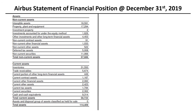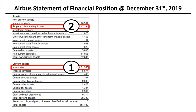Now that we know the main line items on the asset side, it is important to put things in perspective by identifying the top three by size: inventories of 32 billion euros, property plant and equipment of 17 billion euros, and intangible assets of 17 billion euros — that's 57% of the value of assets in just three line items.